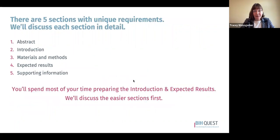There are five sections of the Lab Protocols article that have unique requirements, and we are going to discuss each of those sections in detail. Those are the abstract, the introduction, the materials and methods, the expected results, and the supporting information sections. The introduction and expected results sections take the most time, so that's where we'll focus most of our discussion, but we'll cover the easier sections first.